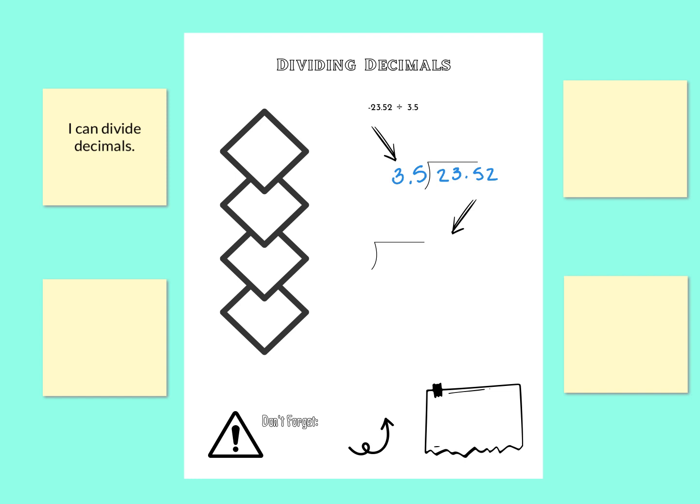The first thing that we're going to need to do is to move the outside decimal. We want to move that to make it a whole number. So this would have to move one time to make that 35 instead of 3.5. And then our next step would be to move the inside decimal to match. Move the inside decimal the same.